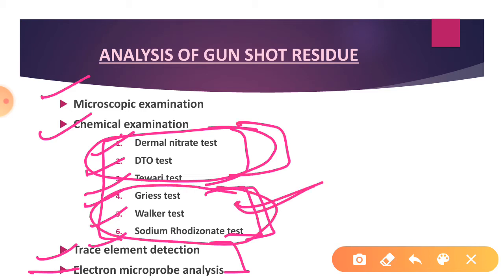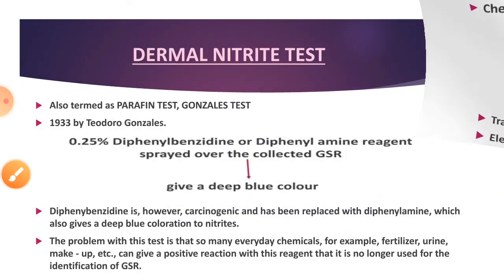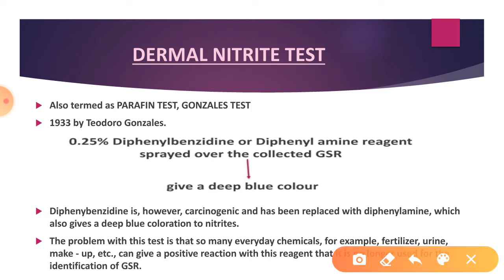First, we will talk about the Dermal Nitrate Test. The Dermal Nitrate Test is also called the Paraffin Test or Gonzels Test. It is called the Paraffin Test because the test is performed using paraffin — the cast is the collection method used to collect GSR.